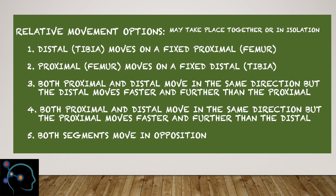Or both the proximal and distal bones could move in the same direction into external rotation, but the proximal femur would move faster and further than the distal tibia, which would place the tibia in a position of relative internal rotation. And lastly, both segments can move in opposition.